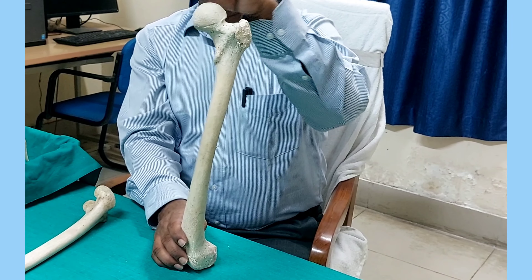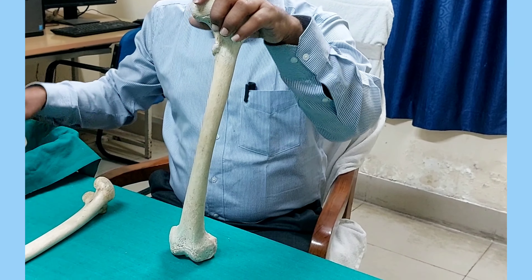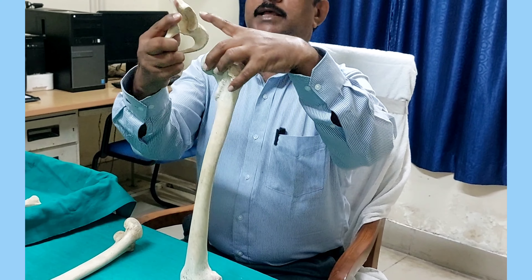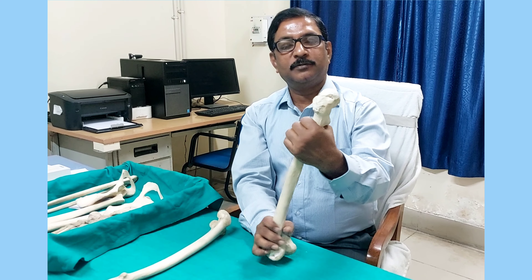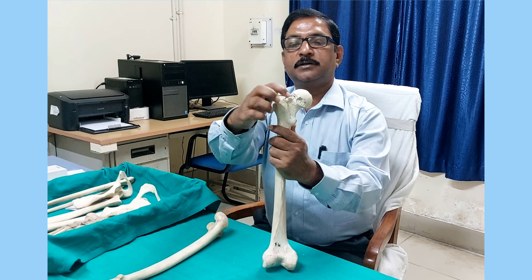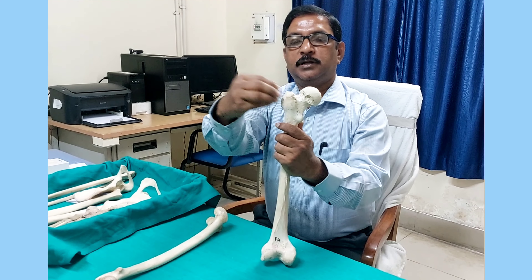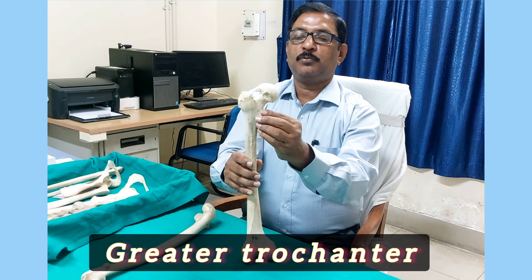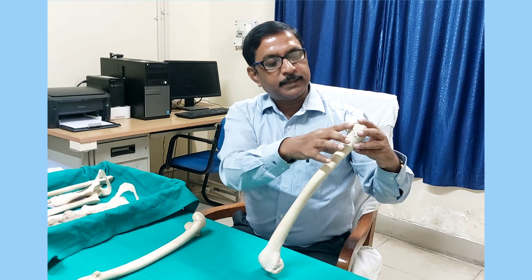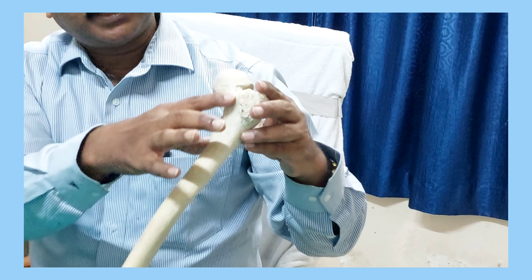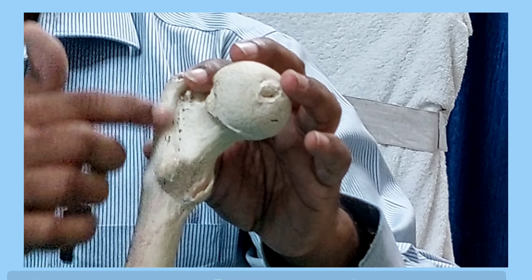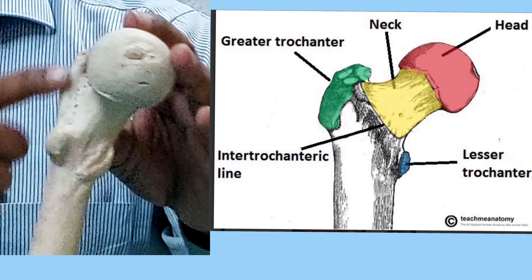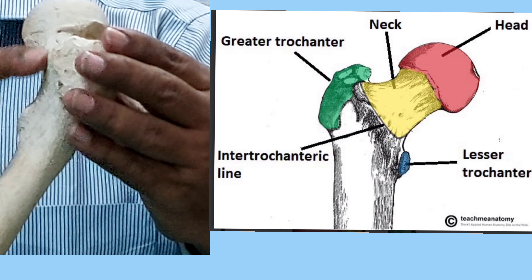The head faces medially because it articulates with the hip bone to form the hip joint. Since the acetabulum faces laterally, the head should face medially. Another important feature of the upper end is the trochanter — the large projection is the greater trochanter, and the small projection is the lesser trochanter. Between them, there is a line anteriorly called the intertrochanteric line, and posteriorly a more prominent ridge called the intertrochanteric crest.